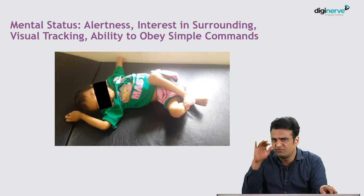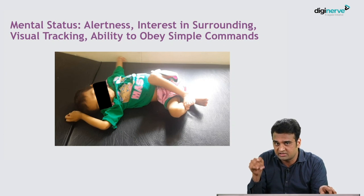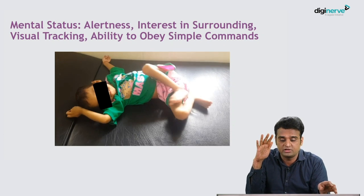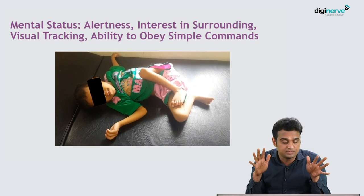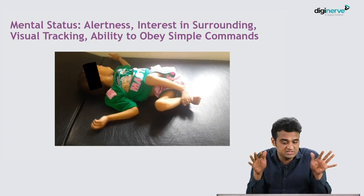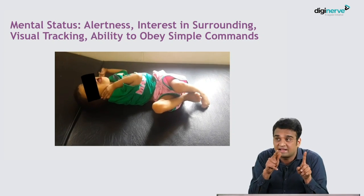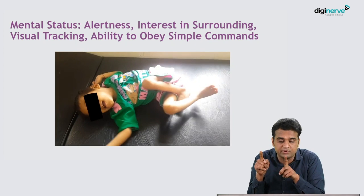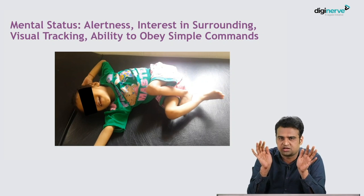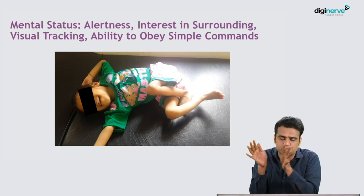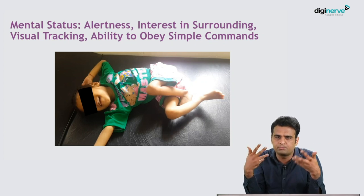Coming to the neurological examination, the first thing we look at is mental status — higher mental function. You can't do everything, but you can definitely look at alertness. In this video, the child is alert, smiling, looking at you, with reasonable interest in the surroundings, tracking what is happening, and able to obey simple commands. Describe mental status in terms of alertness, interest in surroundings, visual tracking, and ability to obey simple commands.